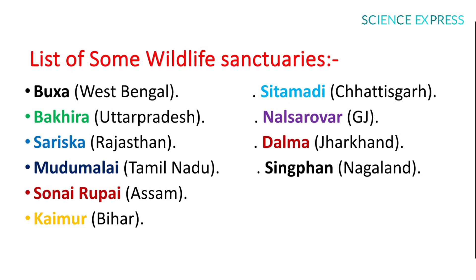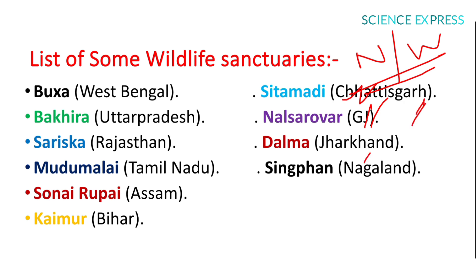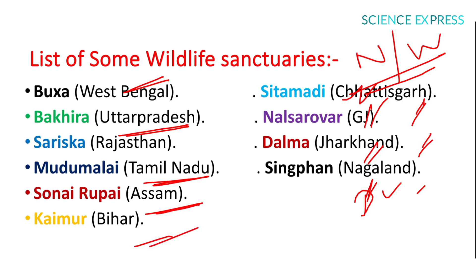Differences between National Parks and Wildlife Sanctuaries: National Parks protect both flora and fauna, while sanctuaries protect only fauna. Cultivation, grazing, and private ownership are not permitted in national parks but are permitted in sanctuaries. Some wildlife sanctuaries in India include Boksa in West Bengal, Bakhira in Uttar Pradesh, Sariska in Rajasthan, Mudumalai in Tamil Nadu, Sonai Rupai in Assam, Kaimur in Bihar, Sitanadi in Chhattisgarh, Nal Sarovar in Gujarat, Dalma in Jharkhand, and Singphan in Nagaland.